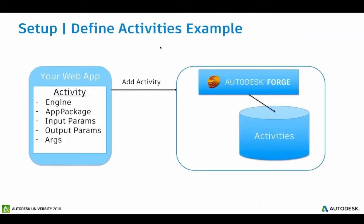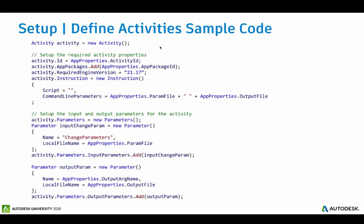When you define your activity, once you have your app package uploaded, you will specify your engine, specify the app package that's actually going to be run, what your input parameters are, what your output parameters are, and any arguments. That activity then gets uploaded to Forge and put in the activities repository. The code is very similar to the app package — you create a new activity object, define the properties, set up instructions, and input and output parameters. You can think of this as your interface into the app package — what you allow your clients to run.